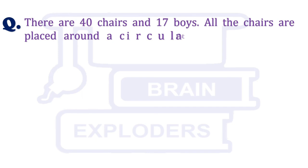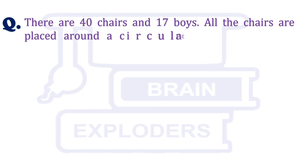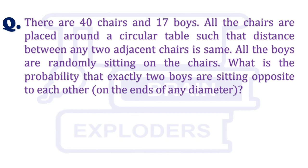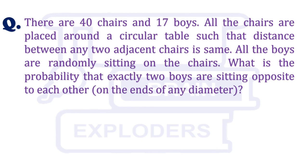Let's move to our another question. There are 40 chairs and 17 boys. All the chairs are placed around a circular table such that distance between any two adjacent chairs is same. All the boys are randomly sitting on the chairs. What is the probability that exactly two boys are sitting opposite to each other? Try this question and comment us the solution and if you have any question like this then please share with us.